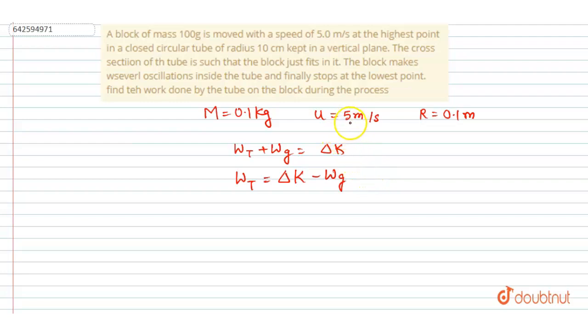What is the change in kinetic energy? Obviously, we can see here the final velocity is 0, so final kinetic energy is also 0. And initial we can calculate, so final minus initial. Initial is half × 0.1 × v² that is 5². So I wrote this expression: half mv².